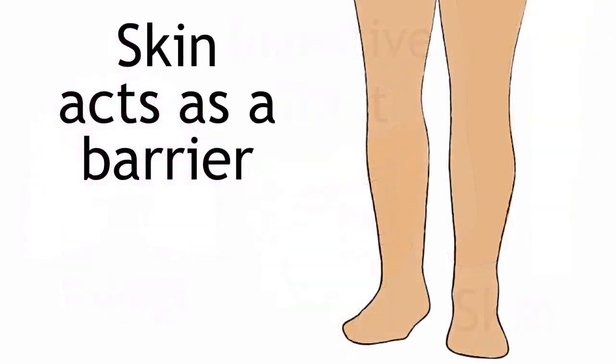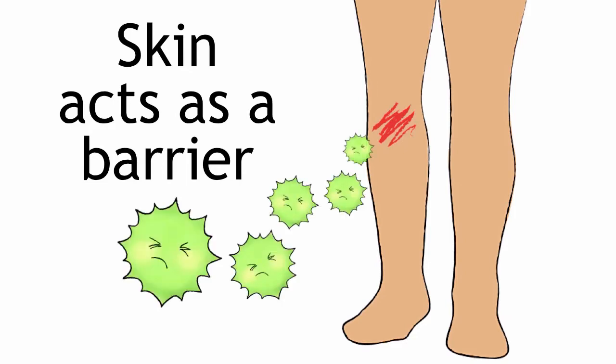Normally, the skin acts as a barrier to prevent pathogens from entering the body. Let's say, for example, you scrape your leg. The barrier, your skin, is now compromised and pathogens, such as bacteria, which are present on your skin or in the environment are now able to enter your cut.